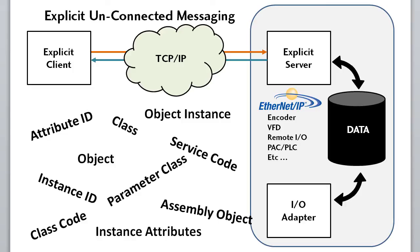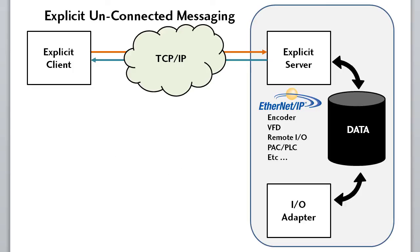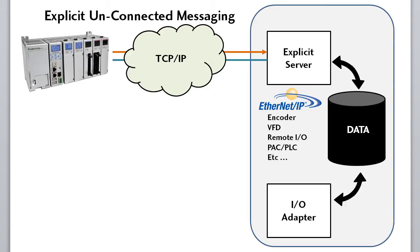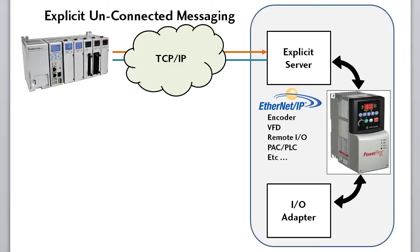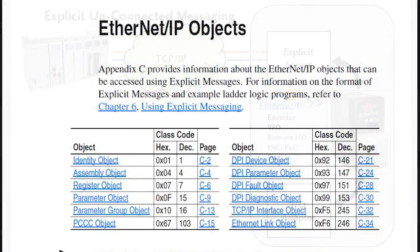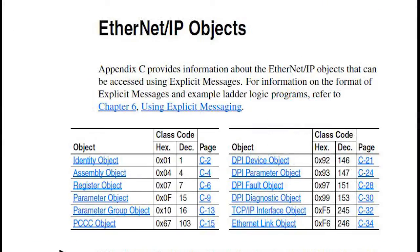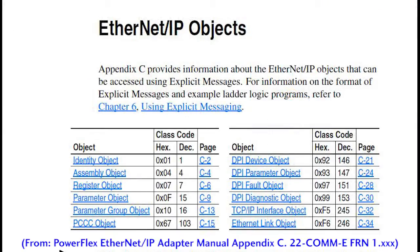For the purposes of this video, let's assume that we will use a Productivity 3000 as the client and an Allen-Bradley PowerFlex 40 variable frequency drive as the server, equipped with the Ethernet adapter module to make it EtherNet/IP compatible. Appendix C of that Ethernet adapter manual summarizes everything we need to know about how to access the data in the PowerFlex 40 drive via EtherNet/IP.